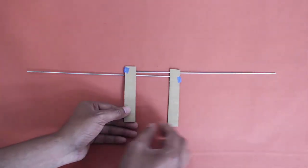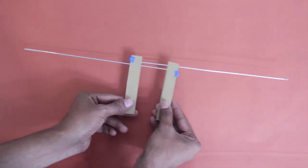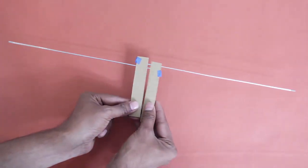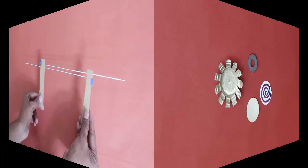Now hold the two cardboard pieces, bring them close or stretch them. This way you can increase or decrease the length of the track.